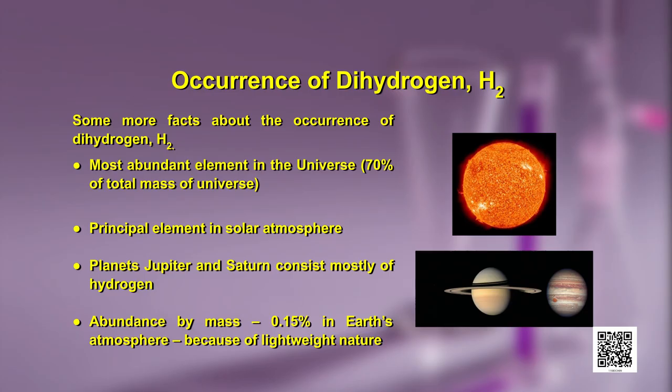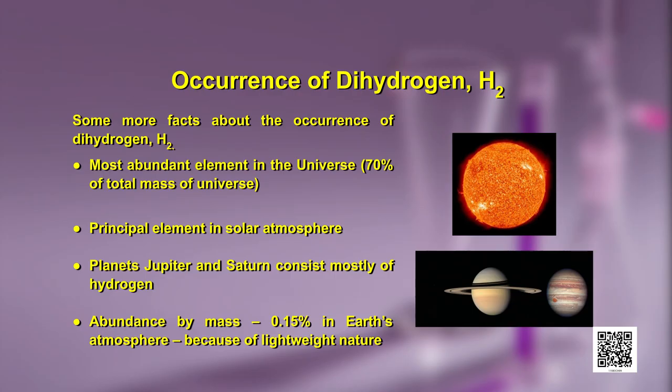You will be excited to know some more facts about the occurrence of dihydrogen. We are calling it H2 because we are talking about the elemental form — H2 is the molecule of hydrogen. It is the most abundant element in the universe; 70 percent of the total mass of the universe is made up of hydrogen. It is also the principal element in the solar atmosphere. In the sun, reactions of hydrogen take place to give helium, liberating the solar energy we receive. Planets Jupiter and Saturn also consist mostly of hydrogen.